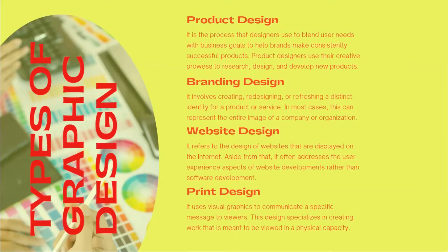Here are the seven types of graphic design. Product design is the process that designers use to blend user needs with business goals to help brands make consistently successful products. Product design can be demanding and requires intricate work, but if you enjoy developing and integrating business goals into design and product decisions, then it could be the type of graphic design you are looking for.